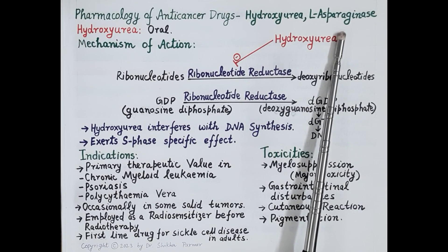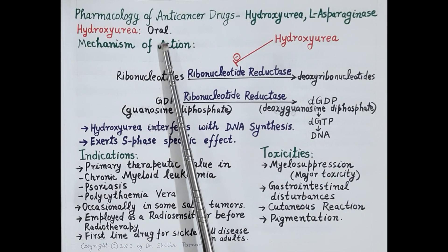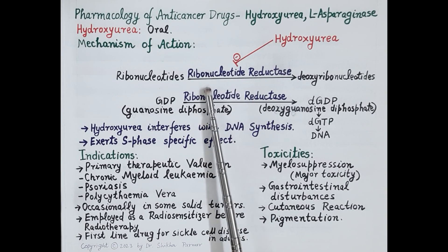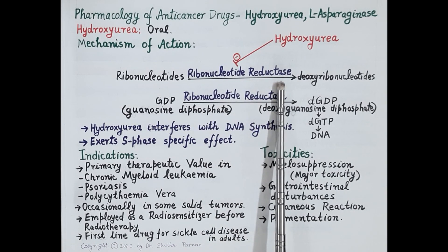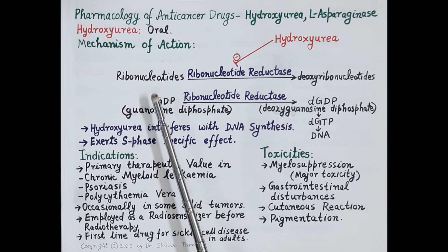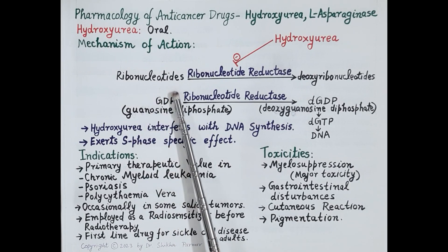Now let's study the pharmacology of hydroxyurea. Hydroxyurea is used orally and produces its anti-cancer effect by inhibiting the enzyme ribonucleotide reductase. Before understanding its mechanism of action, we should know that nucleotides are the building blocks of DNA. Nucleotides that form RNA consist of ribose sugar, so ribonucleotides are the building blocks of RNA.